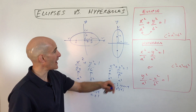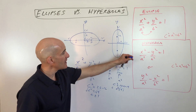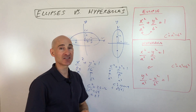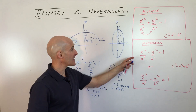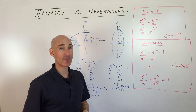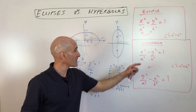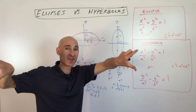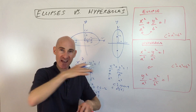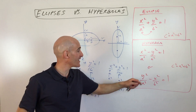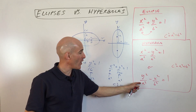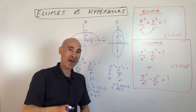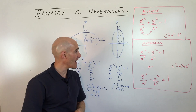Now we're going to switch gears to talk about hyperbolas. With hyperbolas, whichever term comes first — that's the positive term — tells us which direction the hyperbola is going to open. If x squared comes first, it opens horizontally. If y squared is first, it opens vertically, up and down.